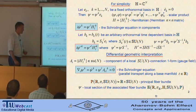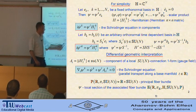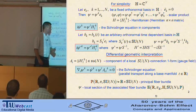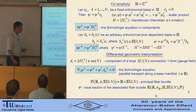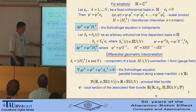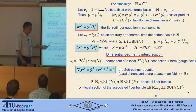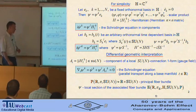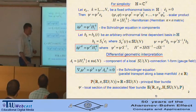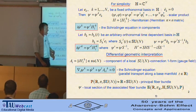We immediately see that the Hamiltonian transforms like a connection. If we introduce the matrix denoted by A(t), which is simply i times the Hamiltonian matrix, then it is an element of the su(n) algebra, and we can identify it with a local su(n) connection one-form, or a gauge field.